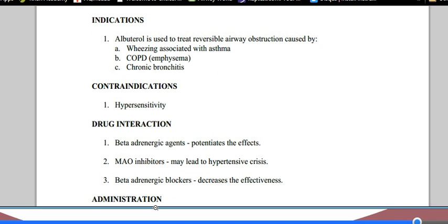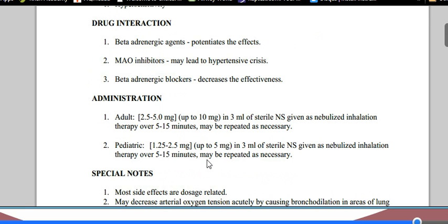Drug interactions are relative. If you have beta adrenergic agents that they already have on board, it potentiates the effects. That means it makes them even more potent. MAO inhibitors can lead to a hypertensive crisis and beta adrenergic blockers or beta blockers decrease the effectiveness of this beta agonist. Well, that's pretty straightforward.